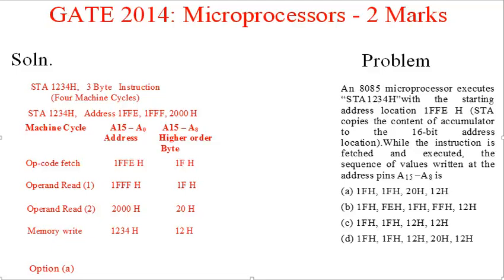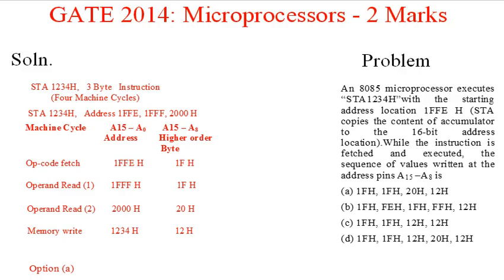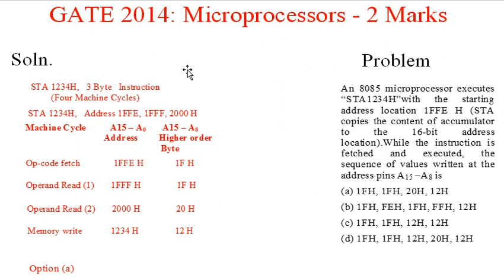The present video solution is the second problem in the set of problems of microprocessors. The problem taken here is from GATE 2014 and is of 2 marks. The problem is given in black text while the solution is given in red text.